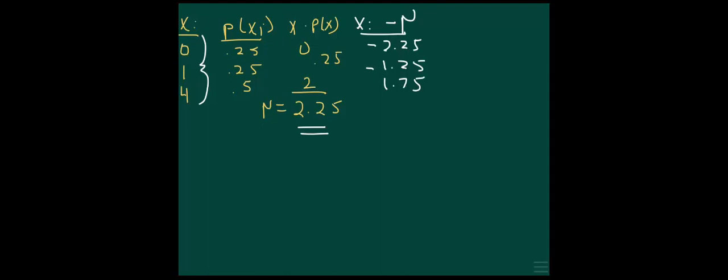Now since they're weighted here, you can't just add these up and get 0 like our normal problems — there is a weight, but you have to weight by probabilities. Remember when we have the deviations and we're going to compute the variance, the next thing we're going to do is square the deviations. So I'm going to have 5.0625, 1.5625, and 3.0625 — that's just minus 2.25 squared, minus 1.25 squared, and 1.75 squared.